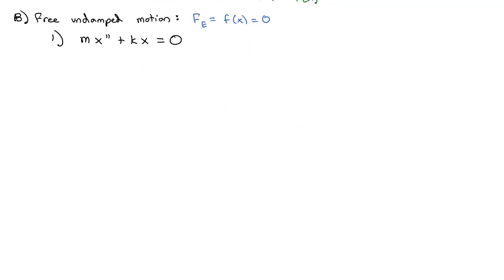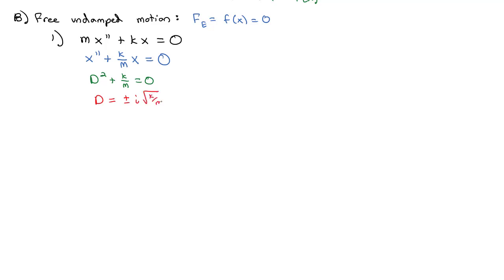To solve this differential equation, we first divide everything by m, giving us x double-prime plus (k/m)x equals zero. Replacing with the characteristic equation, we get d squared plus k/m equals zero. Because k and m are both positive, we end up with complex solutions: d equals plus or minus i times the square root of k over m.